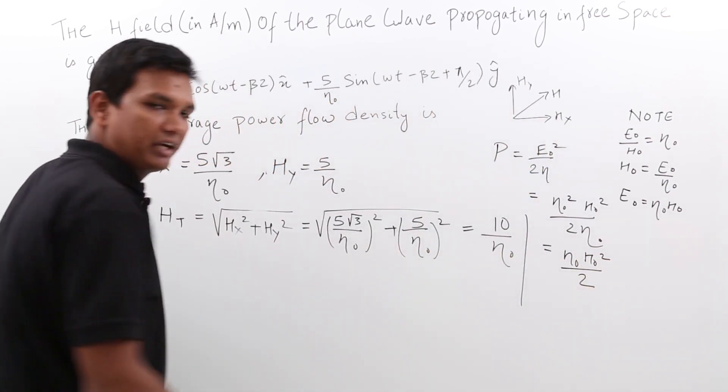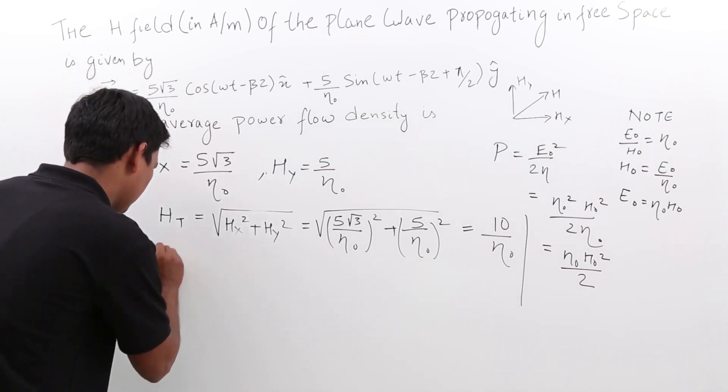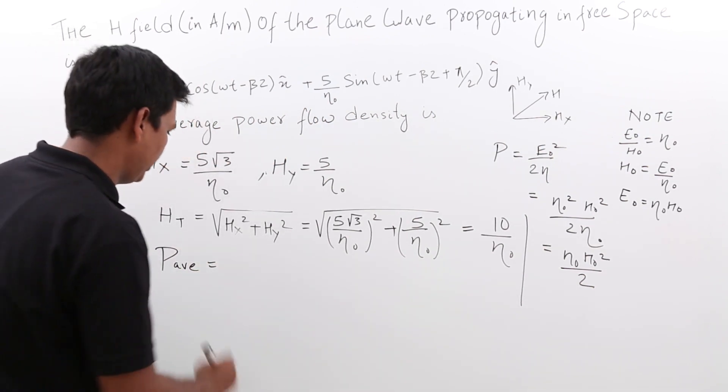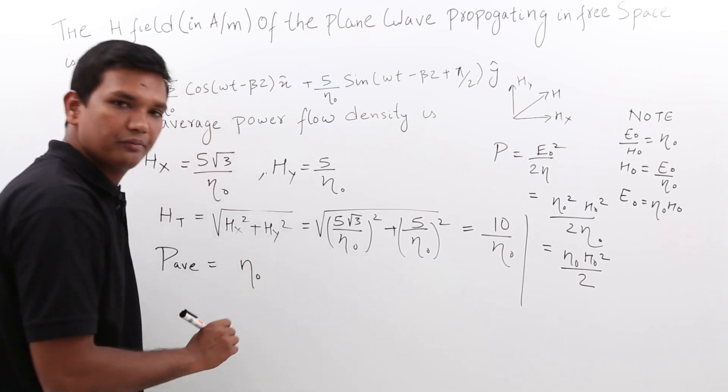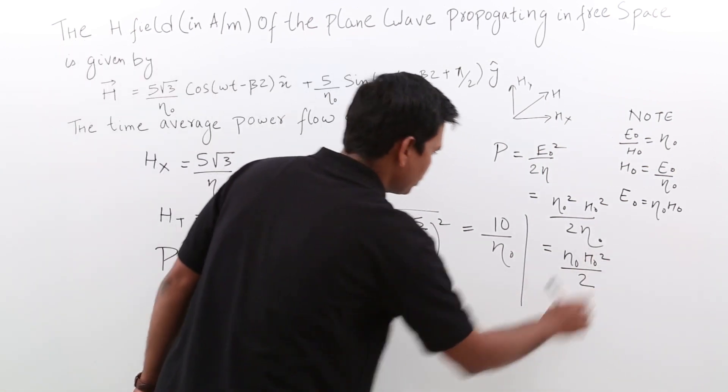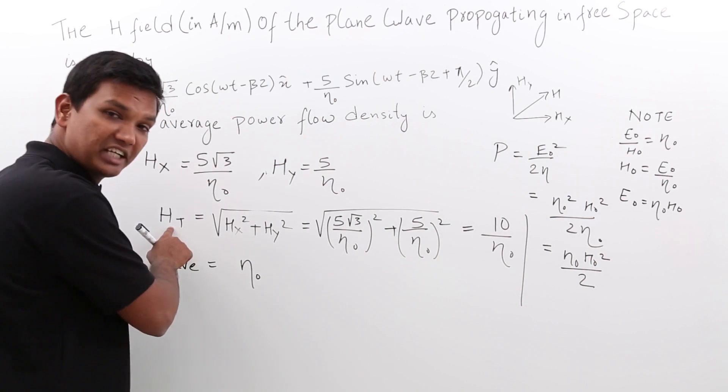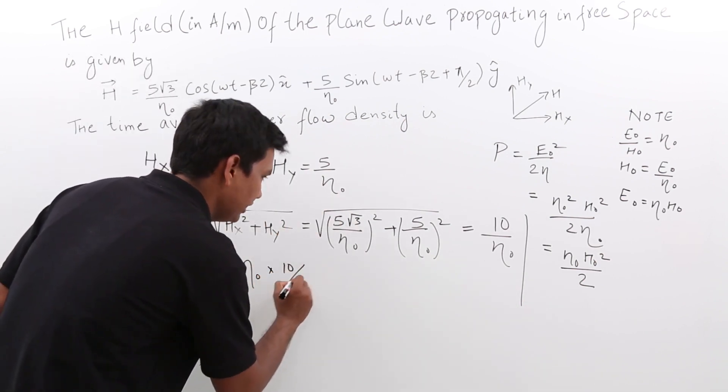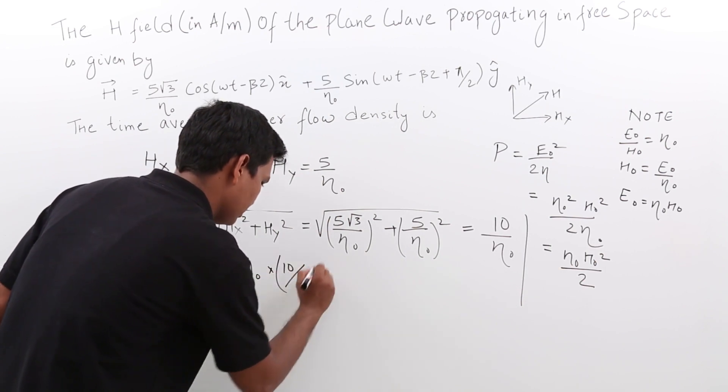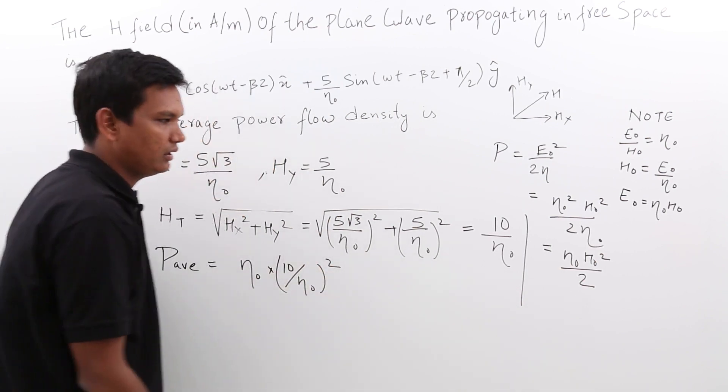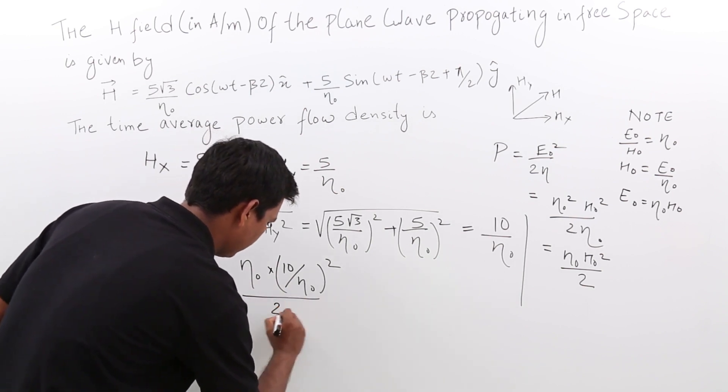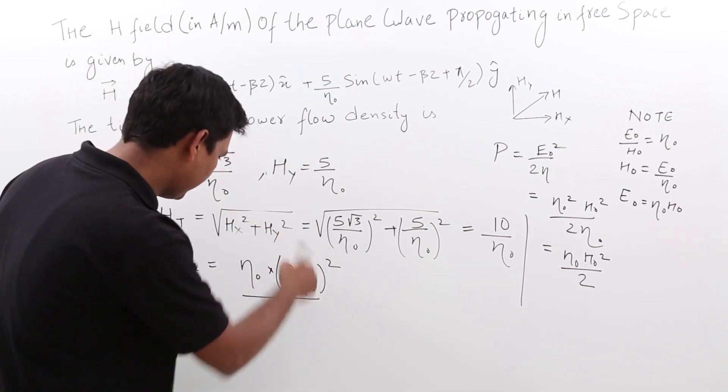So let us find the power average, which would be N naught. Now we have to find H naught square. H naught square will be my H t. So H t is 10 by N naught the whole square, and by 2. So it would be whole thing by 2.